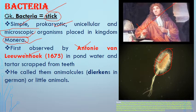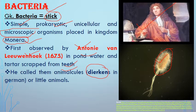The living cells were first observed by Antony van Leeuwenhoek in 1675 using a simple microscope. He was able to observe these simple living structures in pond water and tartar scraped from teeth. He was the first person to observe and discover living cells. He called them 'animalcules' or 'Dierkens,' which in German means 'little animals.'